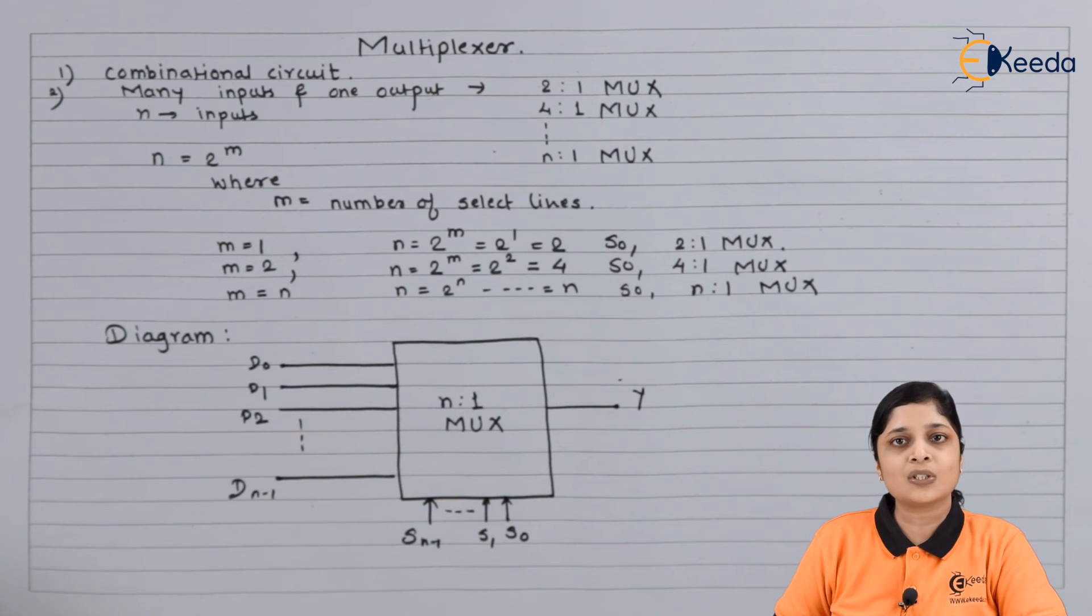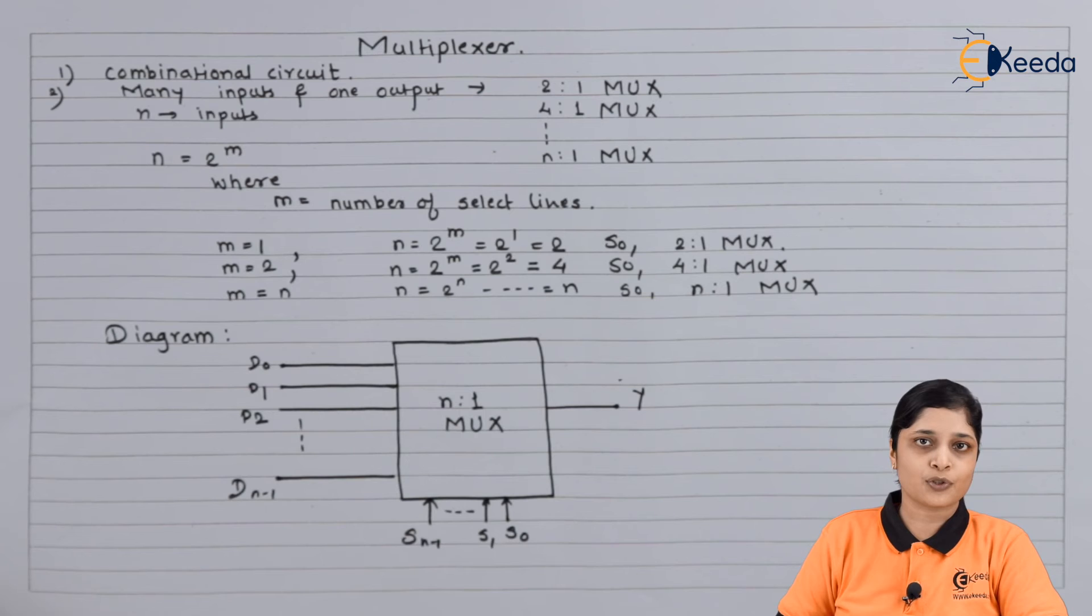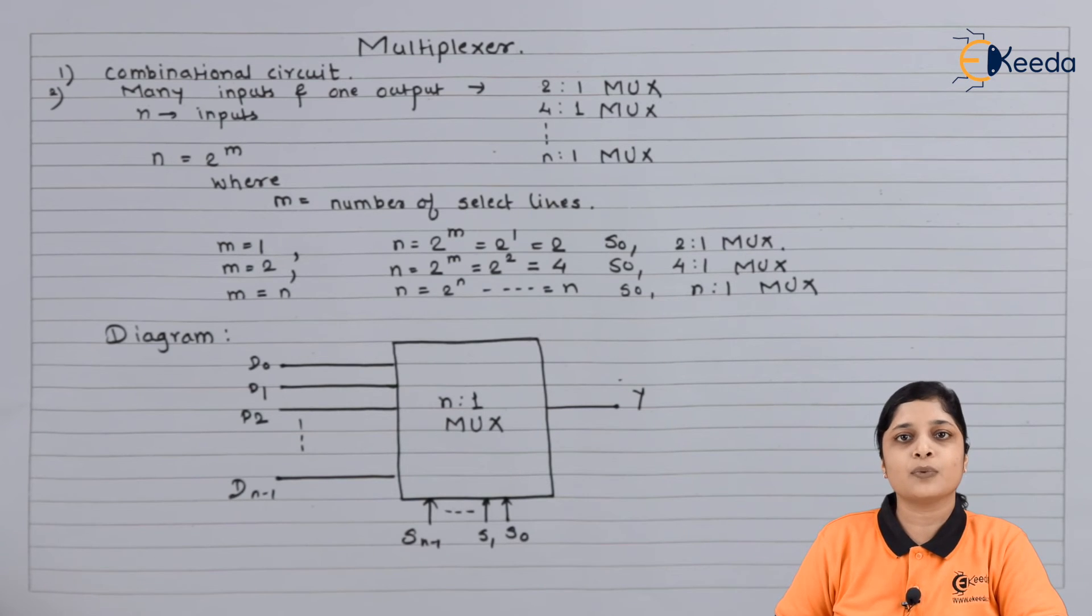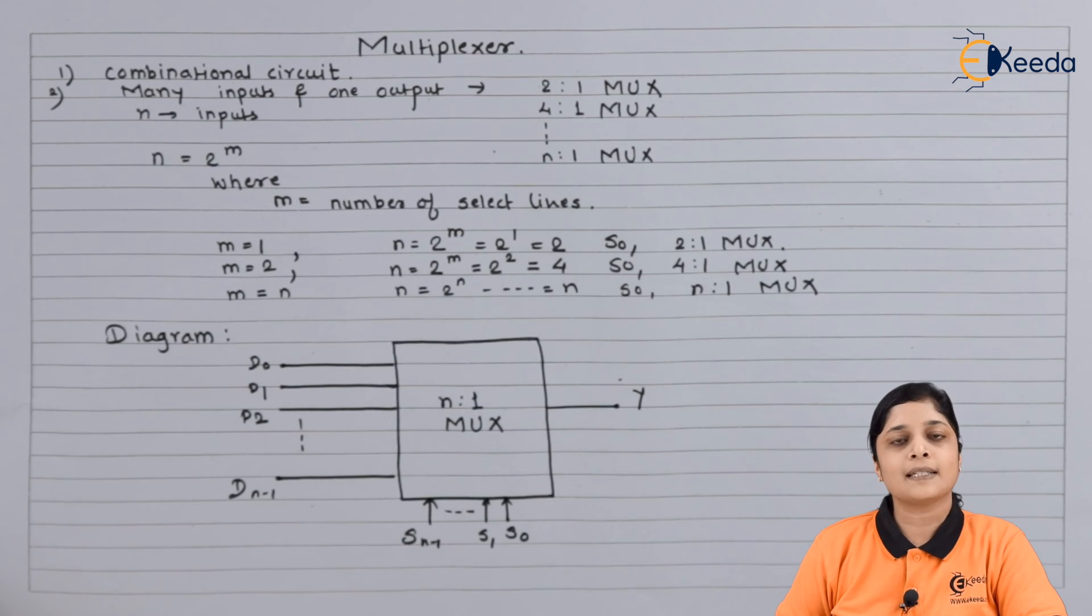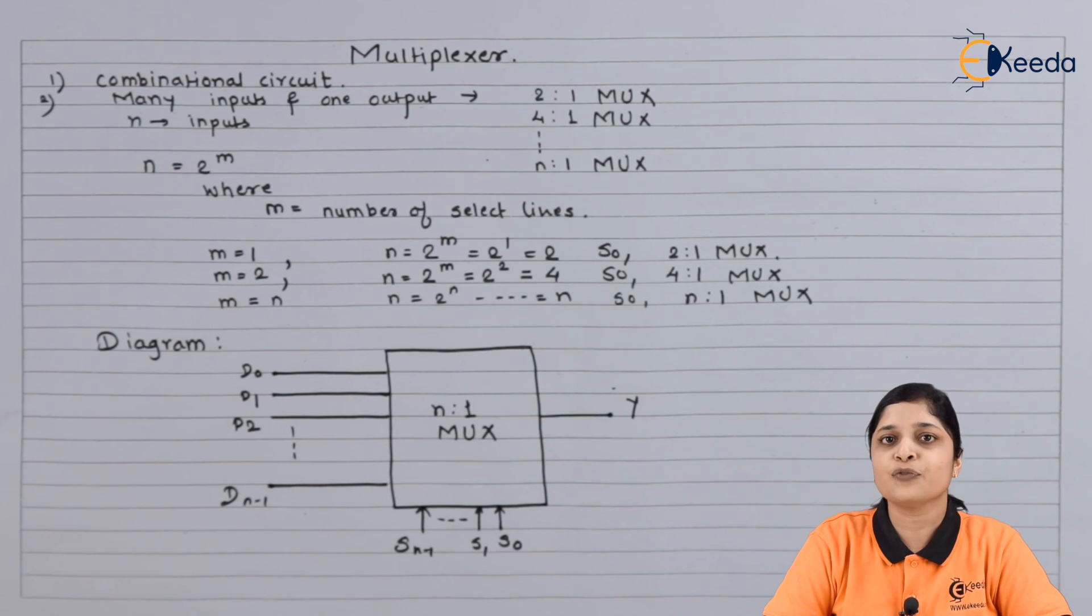So according to the select lines, you are getting the number of inputs, and out of number of inputs only one input we are getting at the output. So these are the types of MUX. This is all about the explanation to the simple MUX and working of multiplexers. Thank you for watching this video. Stay tuned with Ikeeda and subscribe to Ikeeda.